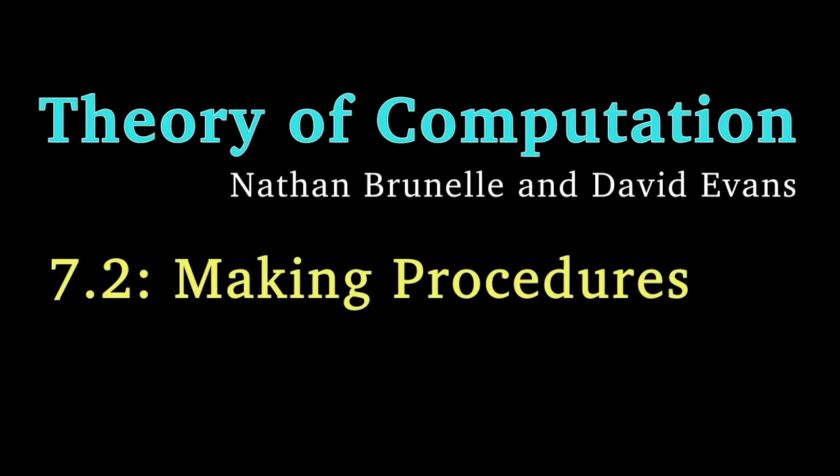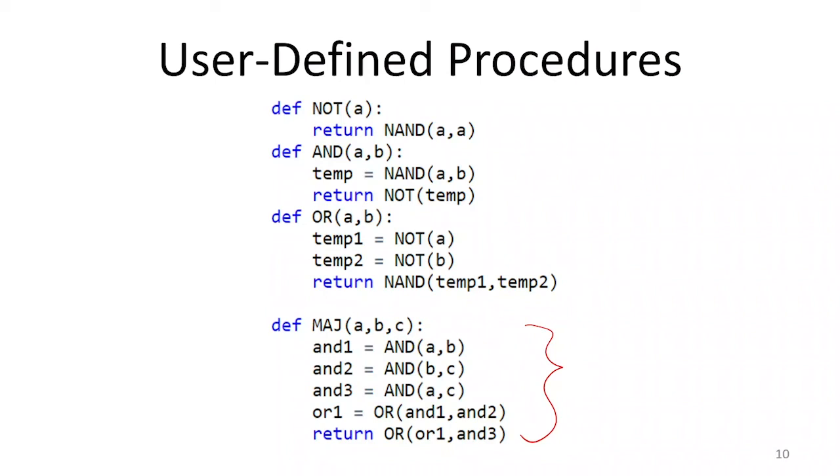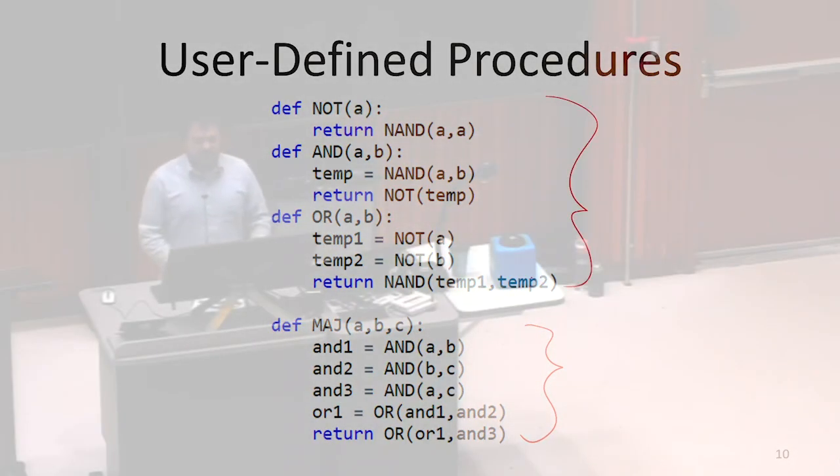We're going to start with these subroutines or procedures. This was our AND or NOT implementation of the majority function. But we mentioned that we could take ANDs, ORs, and NOTs and convert them exclusively to NANDs. And the way that we imagined we would do this was something like that.